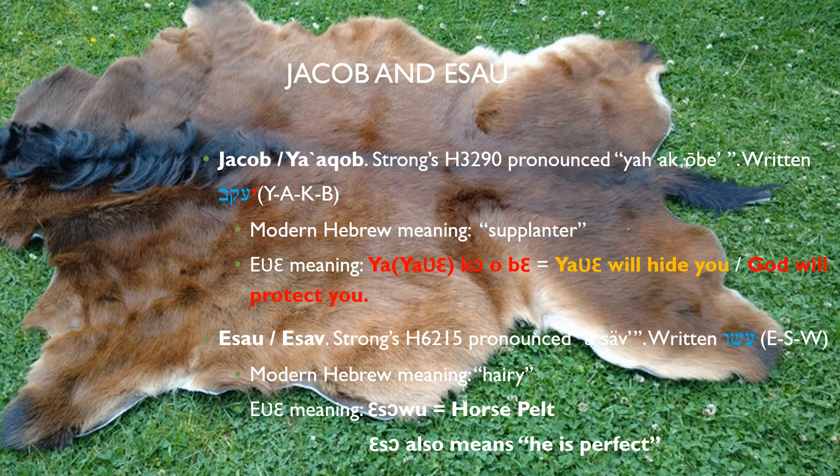Jacob and Esau. Jacob is pronounced in Strong's H3290 as Ya-Kobi, and written in the consonantal text as Yod-Ain-Kof-Bet, that is Y-A-K-B. The modern Hebrew transliterated this name to mean 'supplanter' or 'heel grabber.' Genesis 25:26 says: 'And after that came his brother out, and his hand took hold on Esau's heel. And his name was called Jacob.' Nothing in the text suggests 'supplanter' or 'heel grabber' as the interpretation of the name.